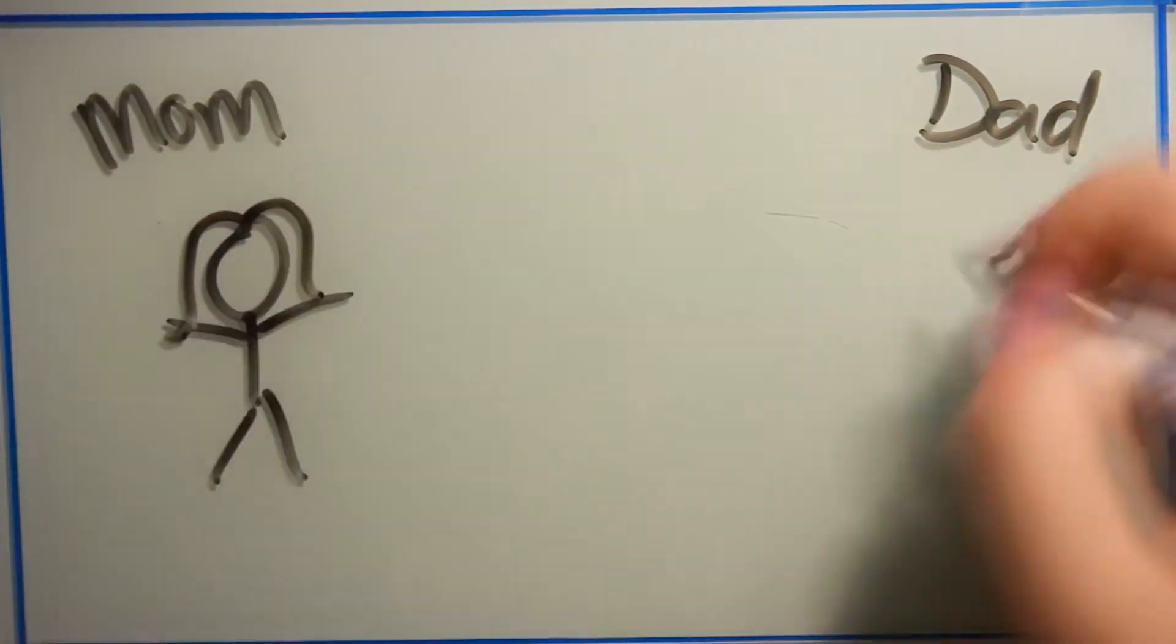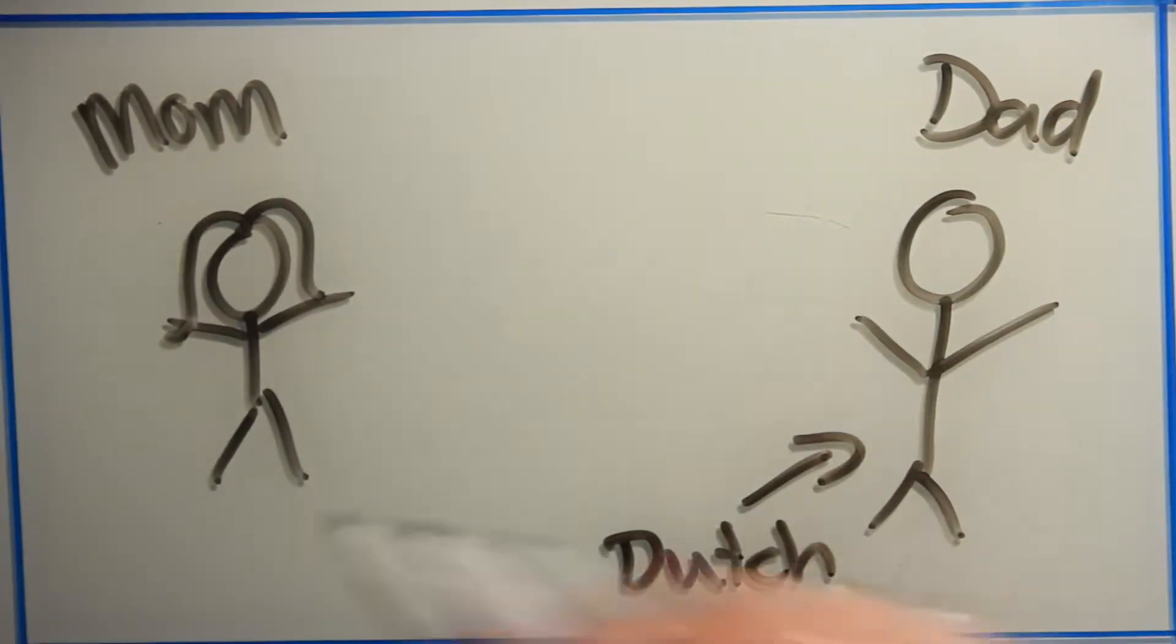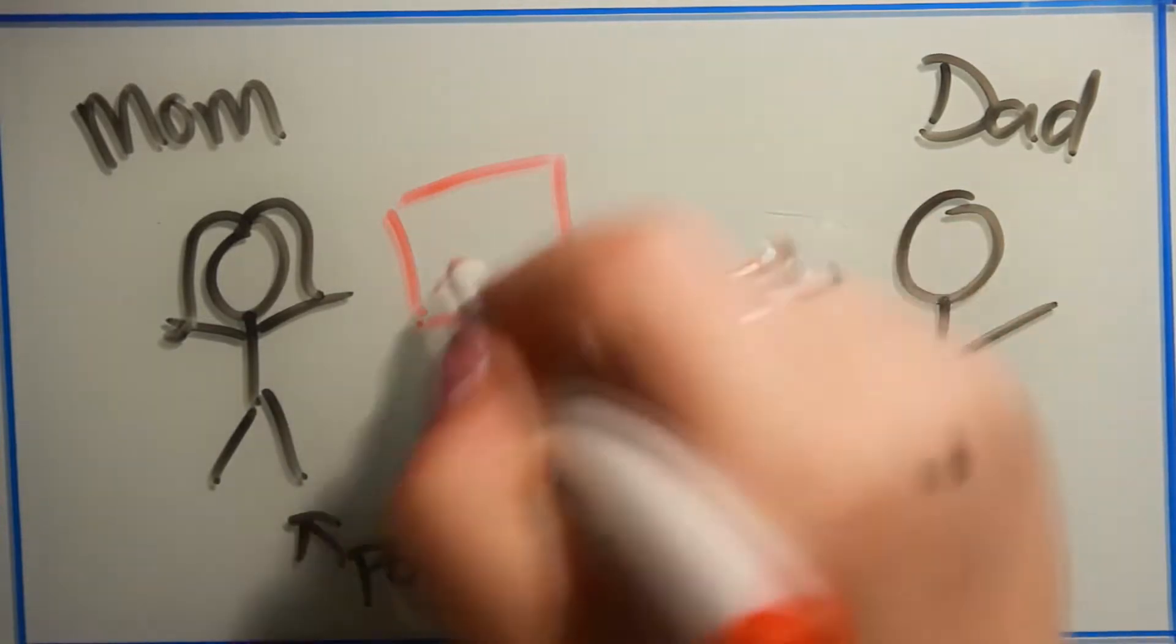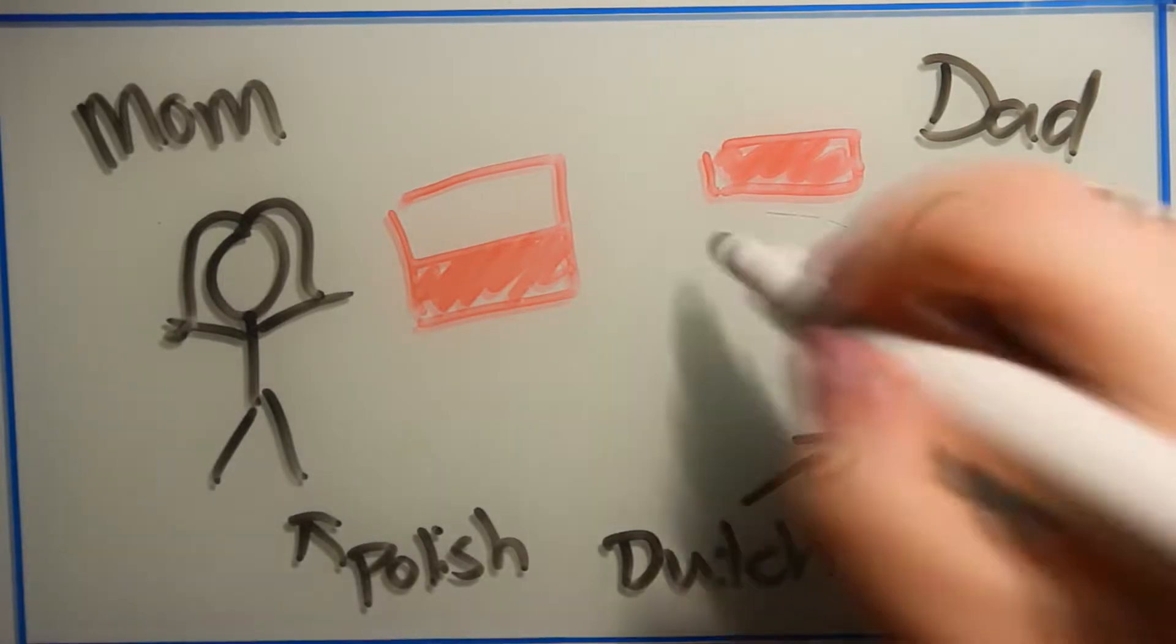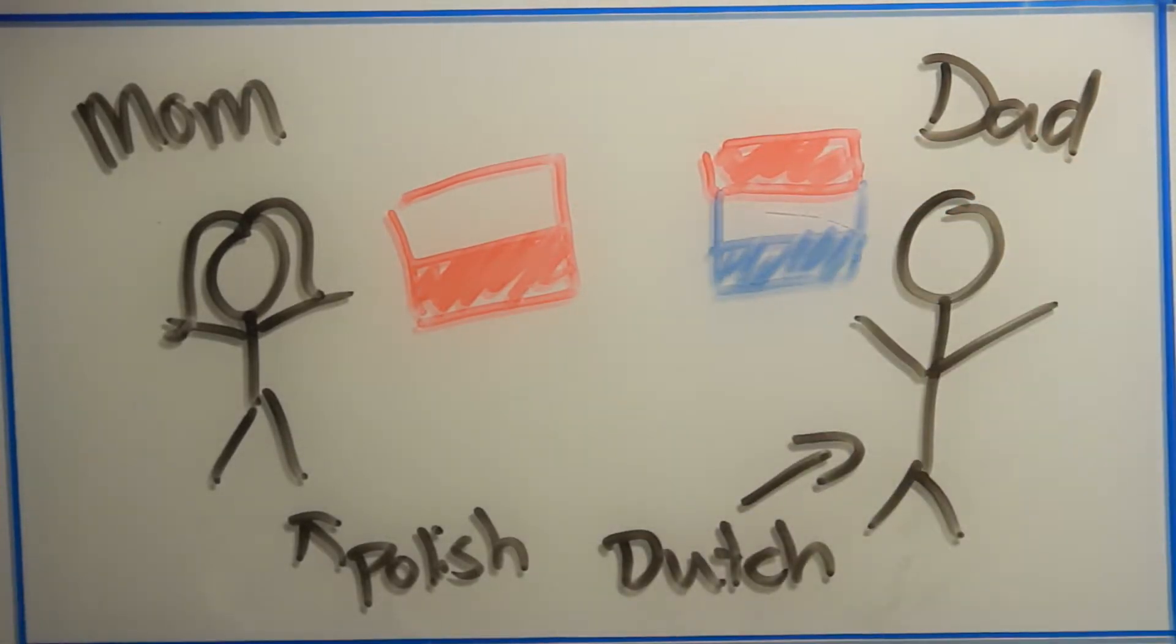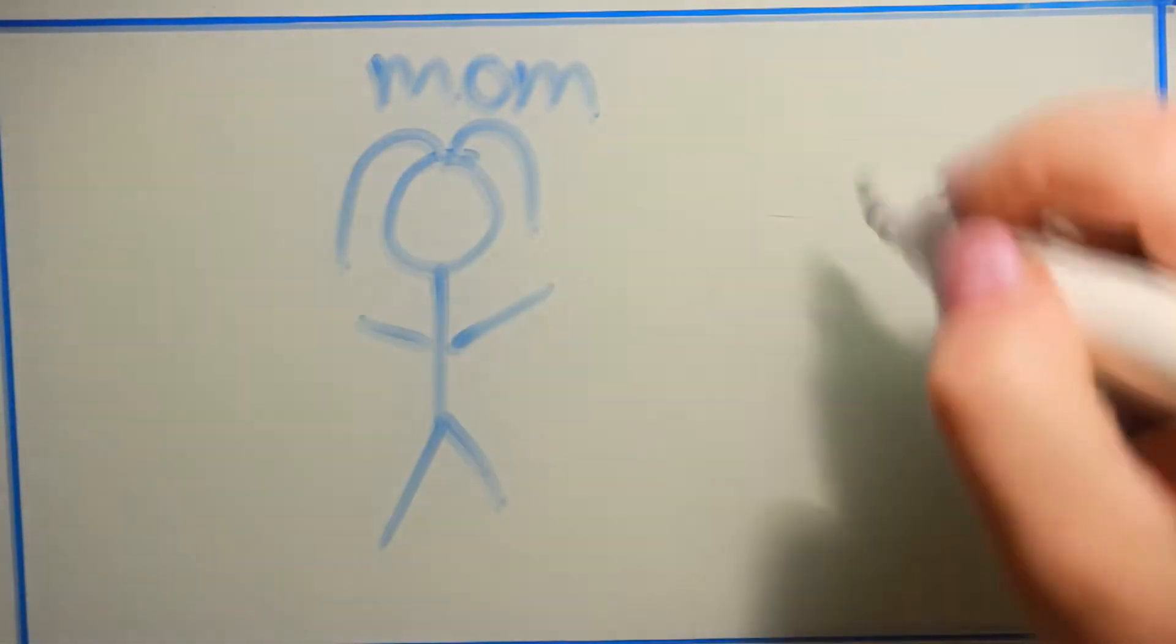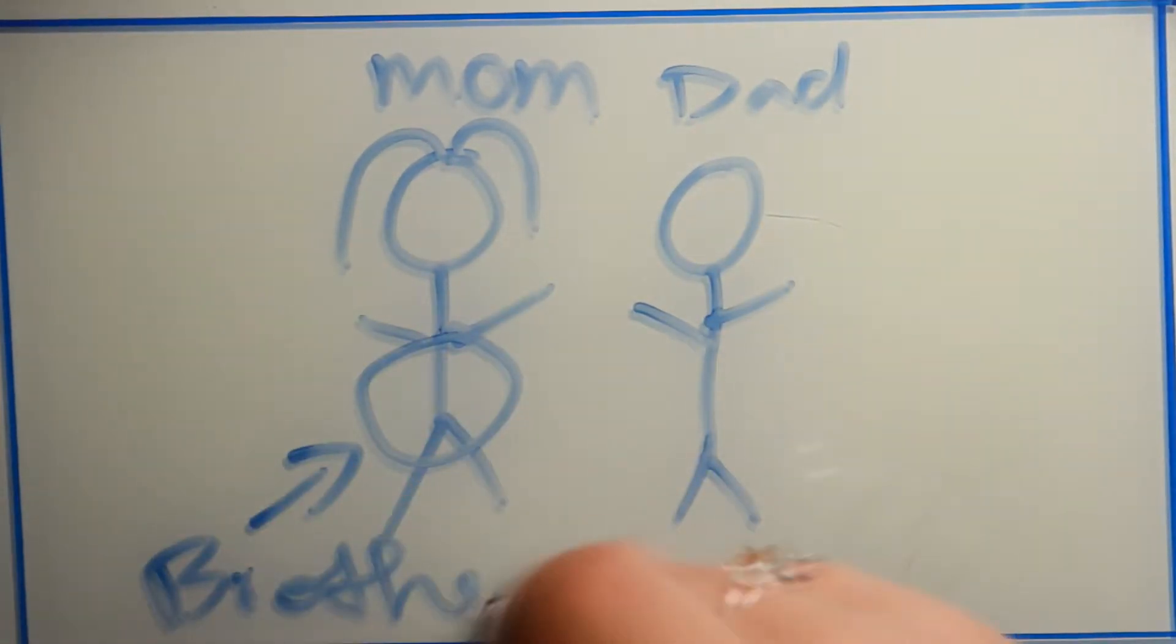I will start and tell you how I was born. My mom and dad, they met in the Netherlands. My mom came on a holiday, she is from Poland, and she met my dad in the Netherlands and they fell in love. They married and got their first child, my brother.